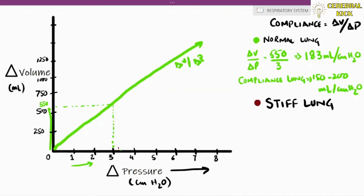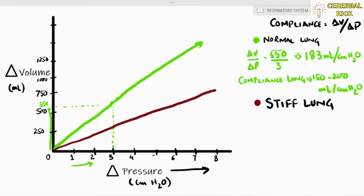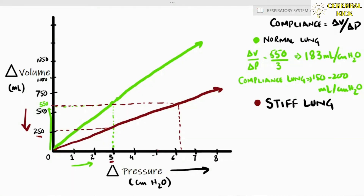If we draw it on the pressure-volume curve, it would flatten and shift rightwards, so the same 550 ml of volume would now be accommodated at around 6 centimeters of water pressure change. Calculating the compliance of a stiff lung: 550 divided by 6 yields 90 ml per centimeter of water.